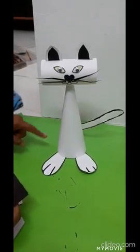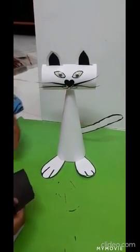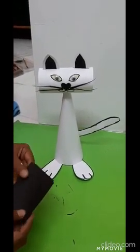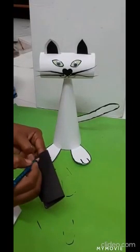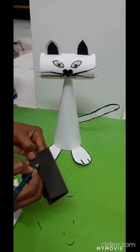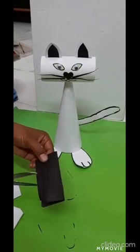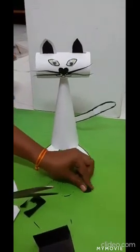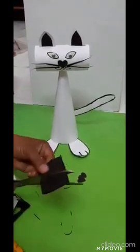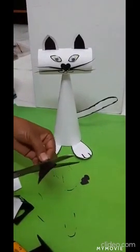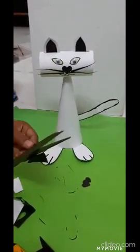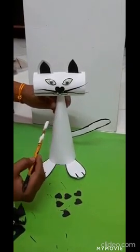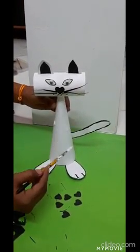Children, you can decorate the body of the cat also. Here with the help of black color paper, I will cut some heart shapes. First draw heart shapes with the pencil and cut it. With the help of Fevicol, I will paste this shape on the body of the cat.